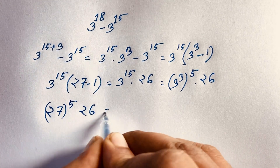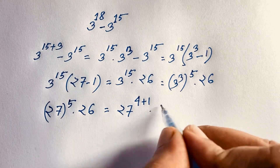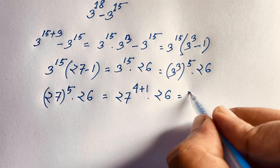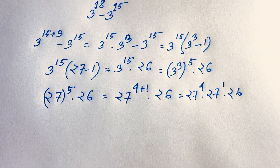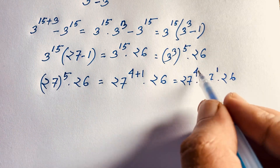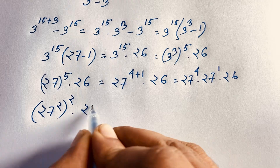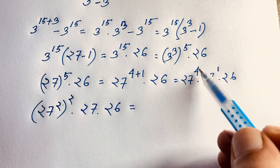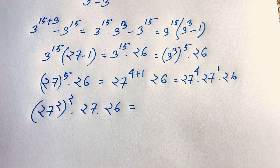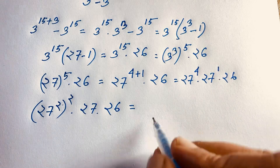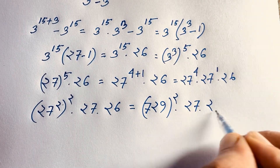Now, 27 to the power 5 can be written as 27 to the power (4 plus 1), because 4 plus 1 equals 5. Applying the exponential law, that gives 27 to the power 4 times 27 to the power 1, times 26. Then 27 to the power 4 equals (27 squared) whole to the power 2, since 2 times 2 equals 4. Now, 27 times 27 equals 729.